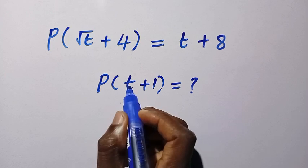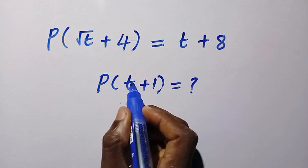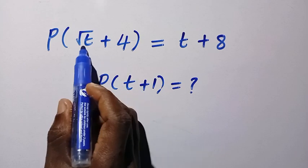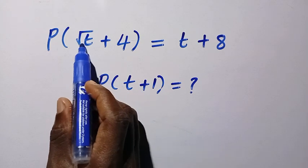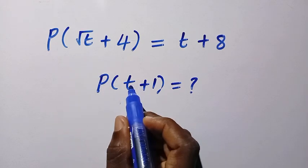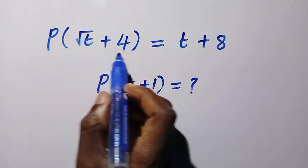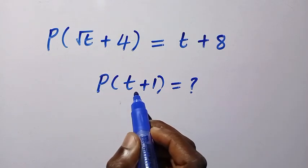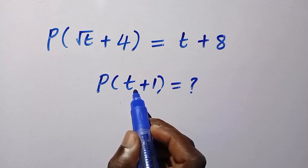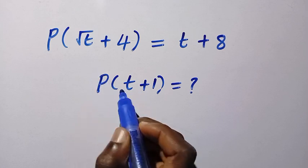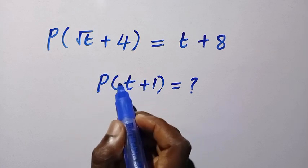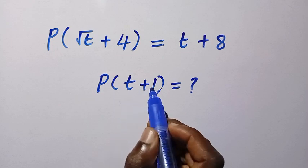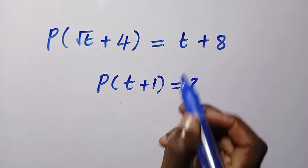What to understand here is we have t, and here is √t, a radical, plus a linear term. So the domain of this one is in radical form, while the domain of this one is in linear form. Now let's see how we can obtain P(t + 1) given this function.